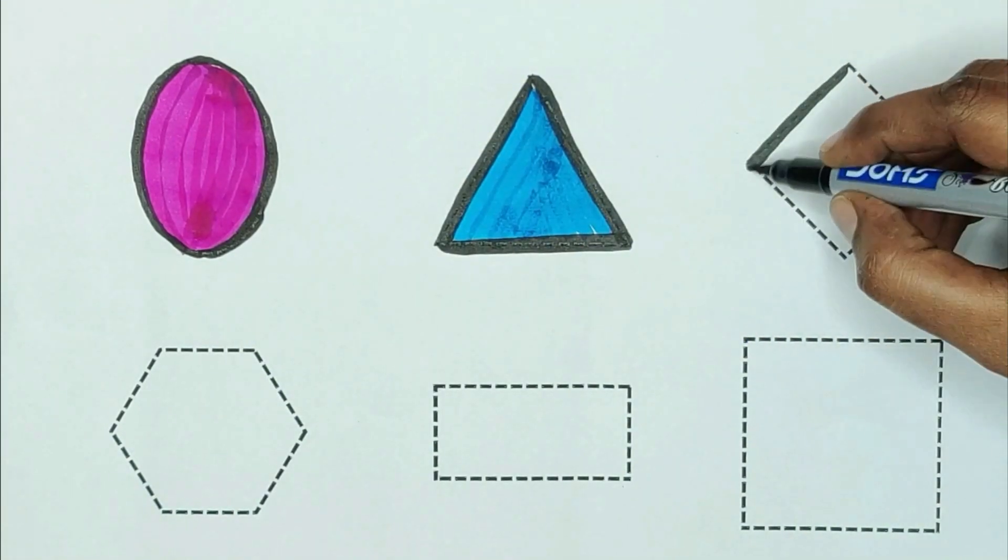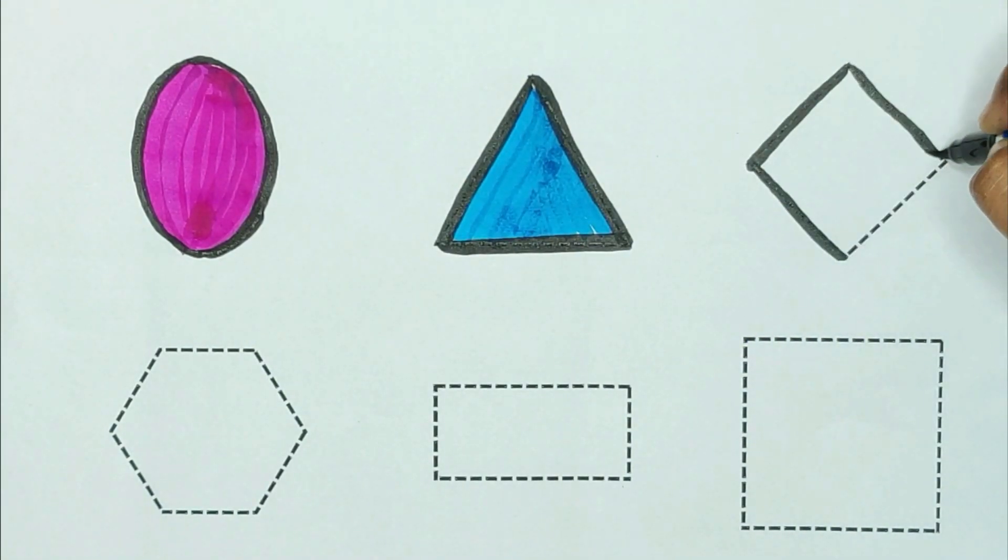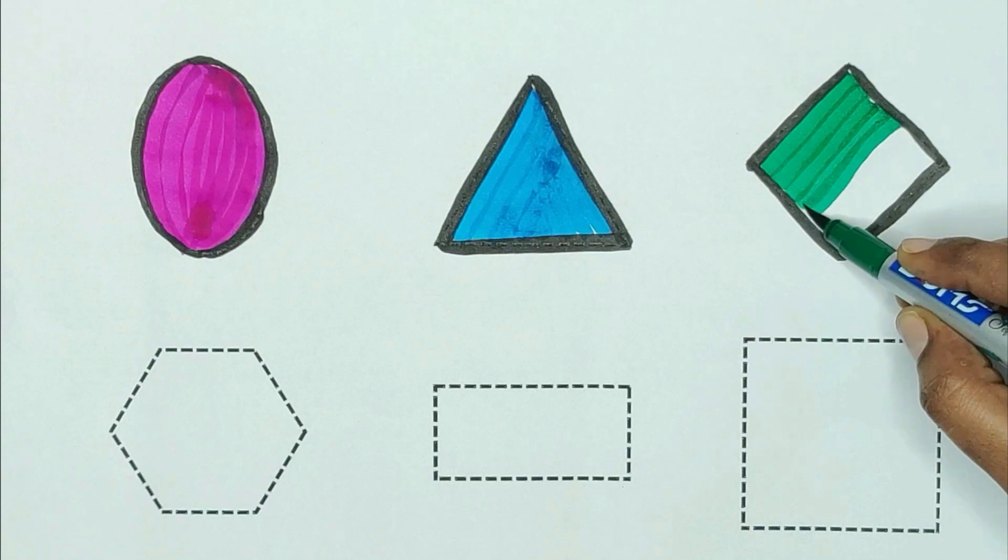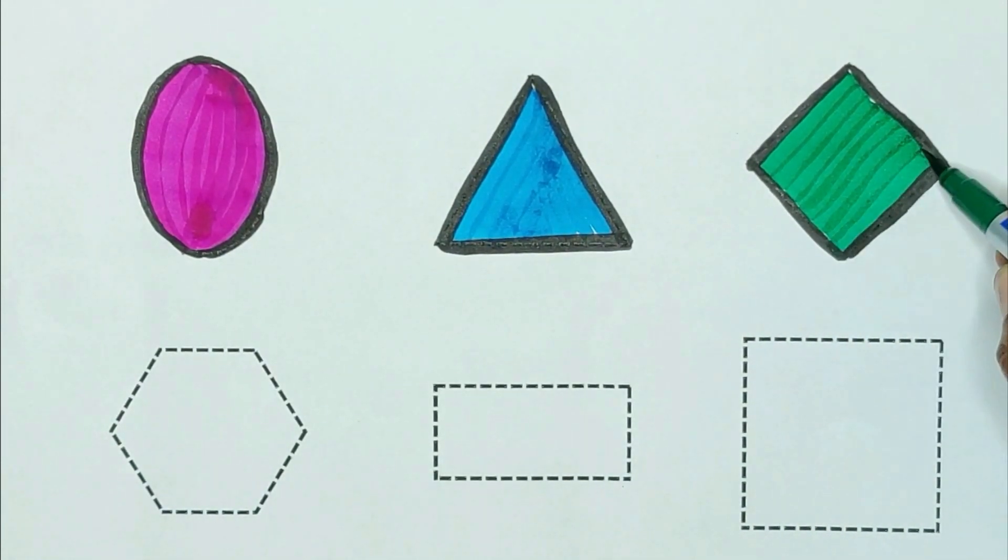Next, rhombus. The shape is rhombus. Green color. Green color rhombus.